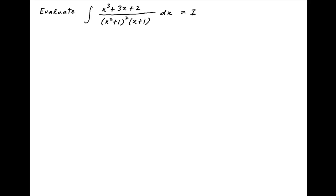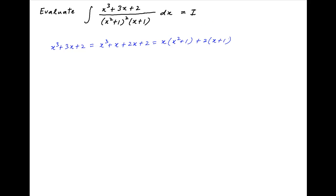Let's denote the given integral by I. The numerator of the integrand, x cubed plus 3x plus 2, can be written as x cubed plus x plus 2x plus 2, which is equal to x times (x squared plus 1) from the first two terms, plus 2 times (x plus 1) from the last two terms.